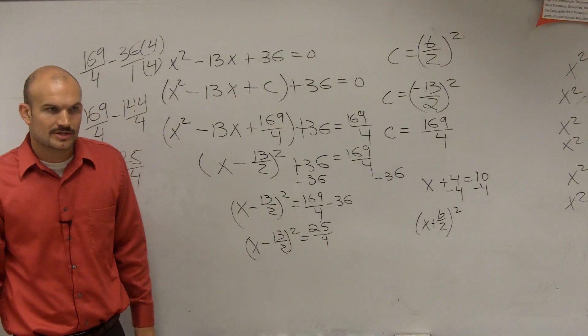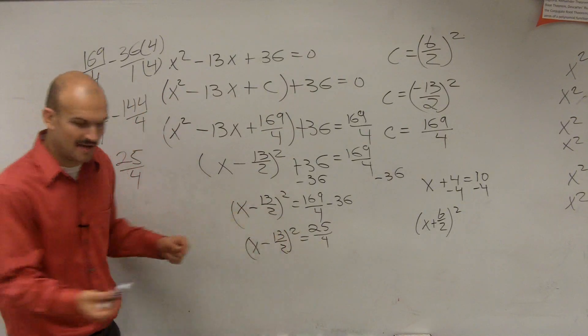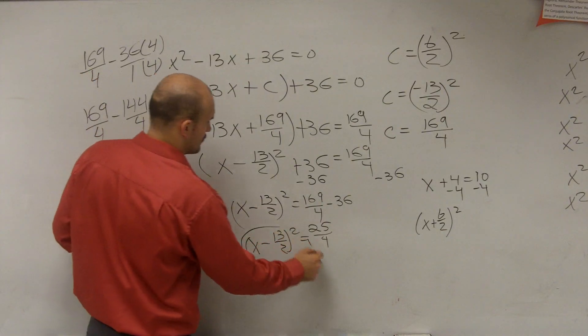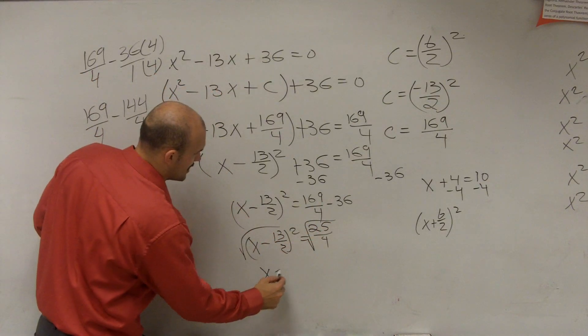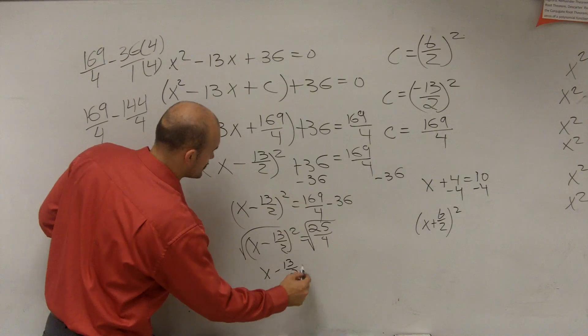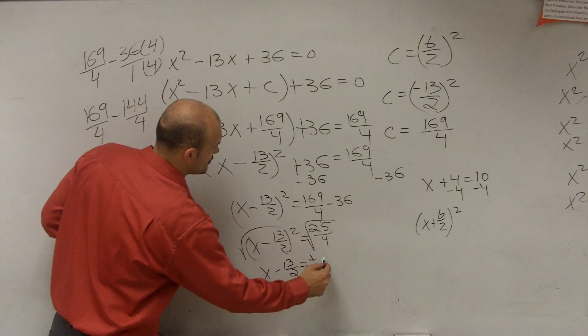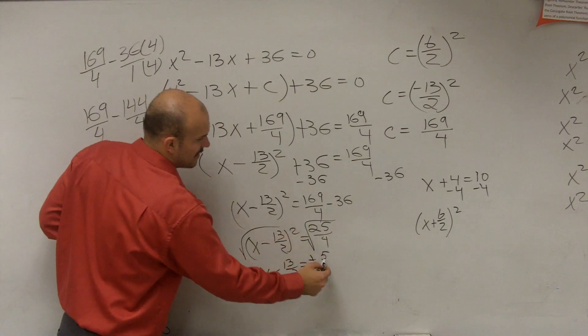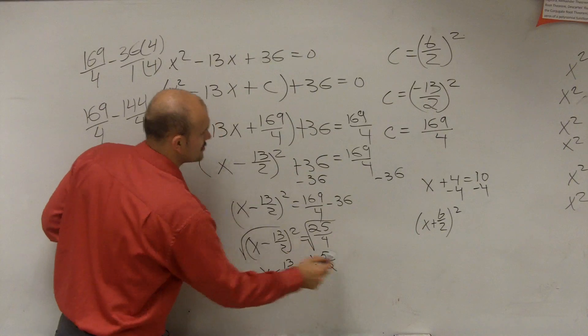So now what's the next inverse operation I have to use? Well, I'm squaring it, so I have to take the square root. So, therefore, I get x minus 13 divided by 2 equals plus or minus, the square root of 25 is 5, the square root of 4 is 2.